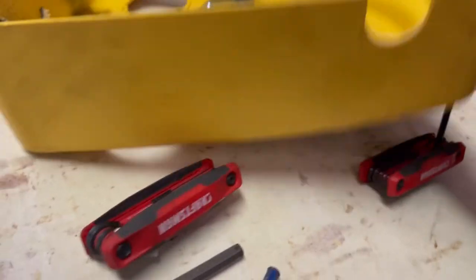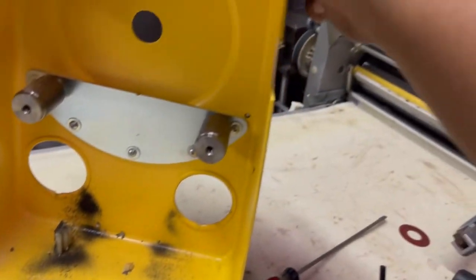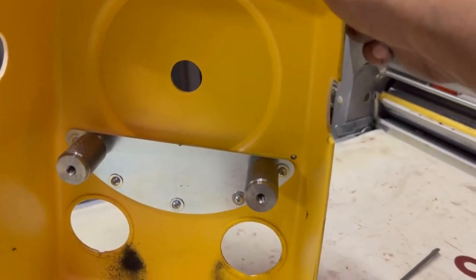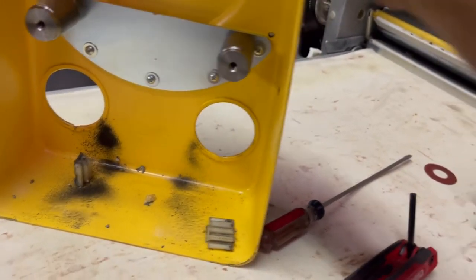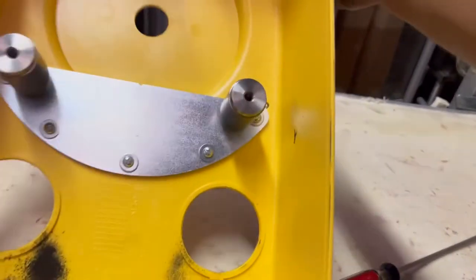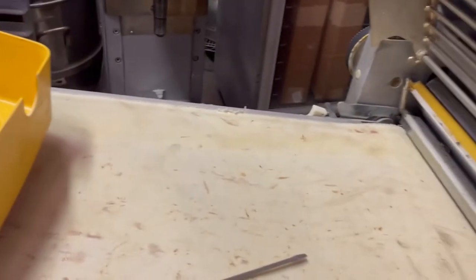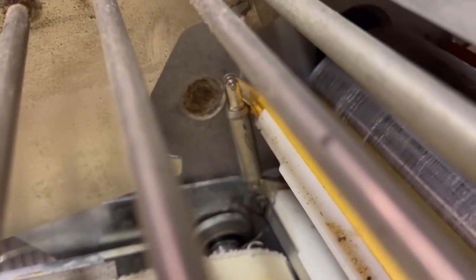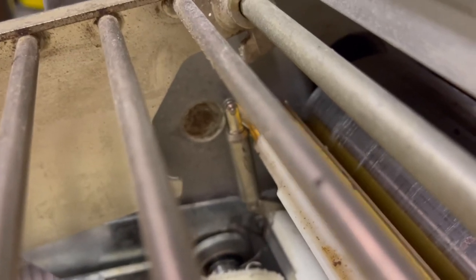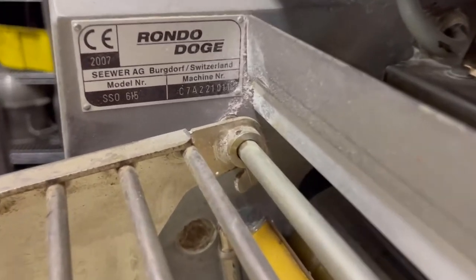All right, not bad for our first time opening a Rondo Dough Sheeter. This is the model, let's see. It's a Rondo SS0616. I was pointing at the wrong thing, so SS0616.